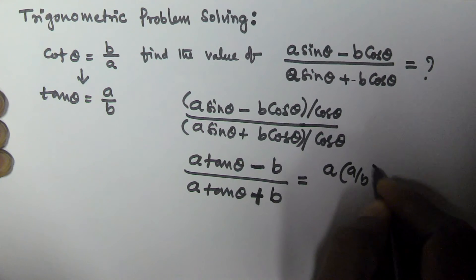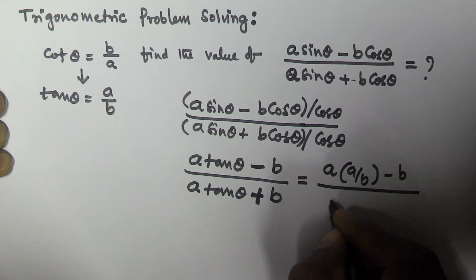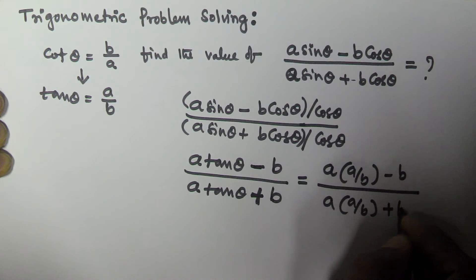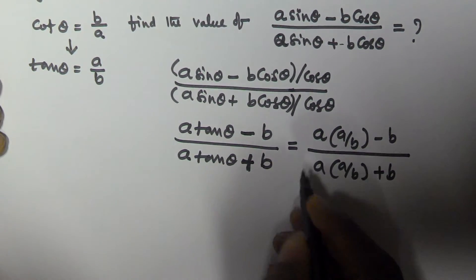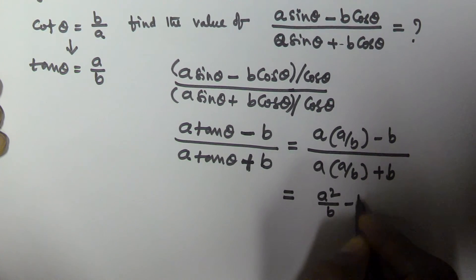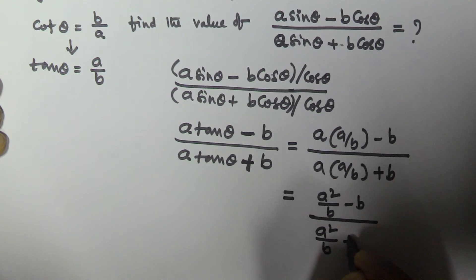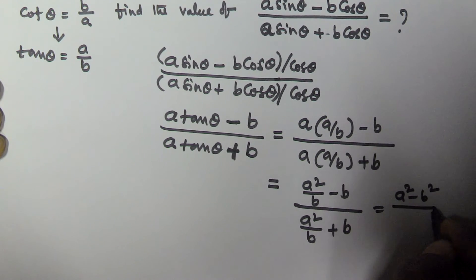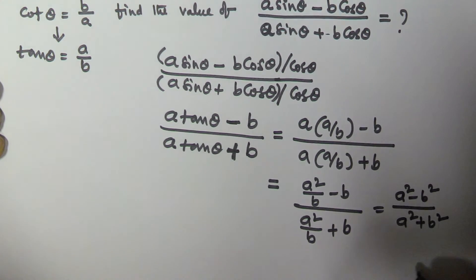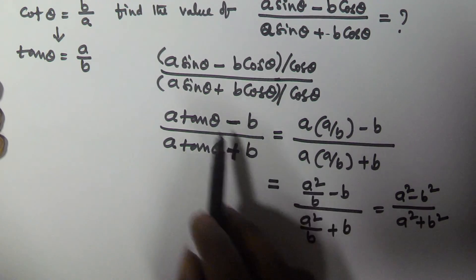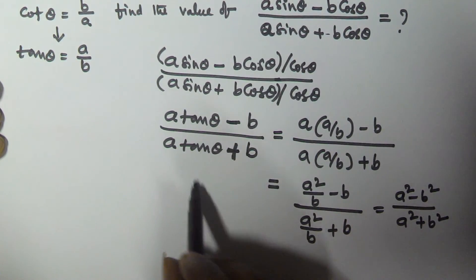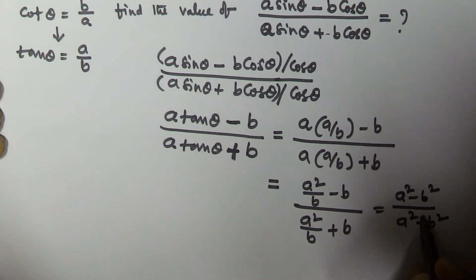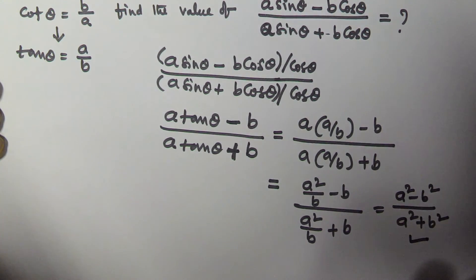Substituting tan theta equals a by b, we get a into a by b minus b, divided by a into a by b plus b. This simplifies to a square by b minus b, over a square by b plus b, giving us a square minus b square divided by a square plus b square. So the value of a sin theta minus b cos theta over a sin theta plus b cos theta equals a square minus b square by a square plus b square. Thank you very much for watching this video, please subscribe to my channel.